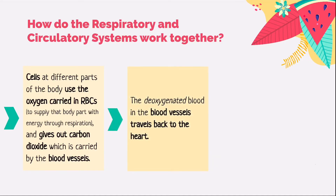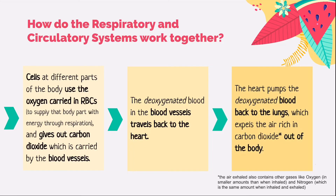The deoxygenated blood in the blood vessels is carried back to the heart. Finally, the heart pumps the deoxygenated blood back to the lungs, where the lungs exhale the carbon dioxide-rich air out of the body. Note that exhaled air contains mostly carbon dioxide, but nitrogen, oxygen, and other gases are still present — some oxygen remains in the exhaled air, while nitrogen and other gases are not used by the body, so their amounts stay the same. This is an important concept to know.